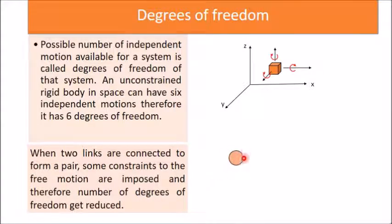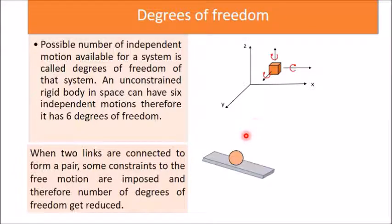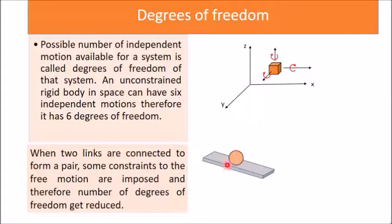Consider a sphere kept in 3D space — it has six degrees of freedom since all possible motions are available. But once I place a rectangular plate in contact with it and fix that rectangular plate, not all motions remain possible. Let's check how many motions are still possible.